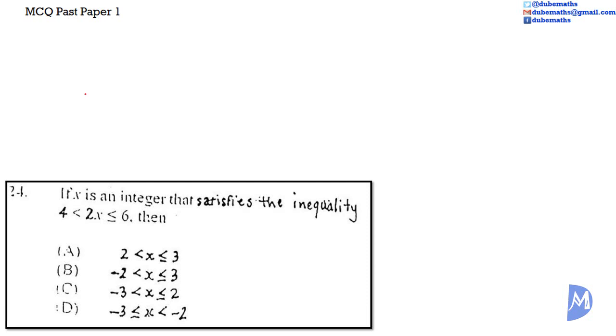We dealt with inequalities in a previous video. Check description. This inequality is in terms of 2x. We want it in terms of x. We need to divide 2x by 2 to get x. We have to divide the entire inequation by 2 to maintain the relationship.